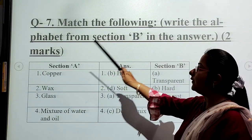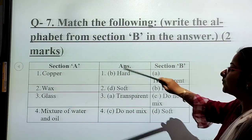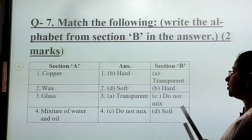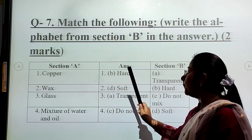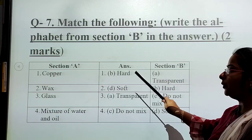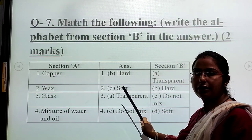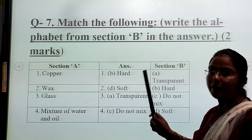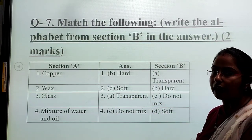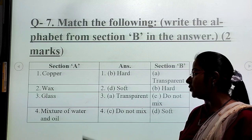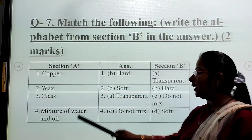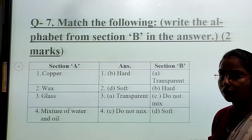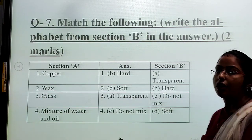Now we will do question number 7. Match the following. Section A is given, you have to write the answers from section B. Copper is a hard material, so write B. Wax is a soft material, so write D. Glass is transparent, you are able to see the other side, so write A. Mixture of water and oil - water and oil do not mix.